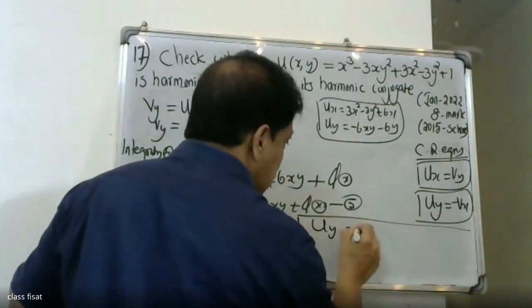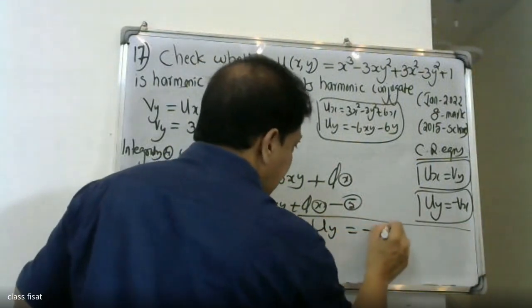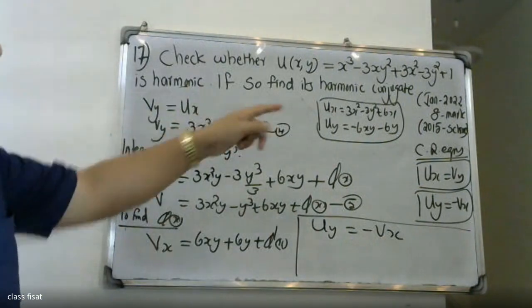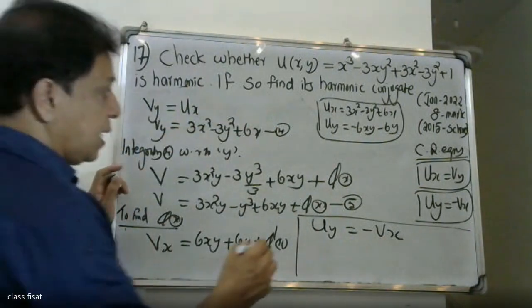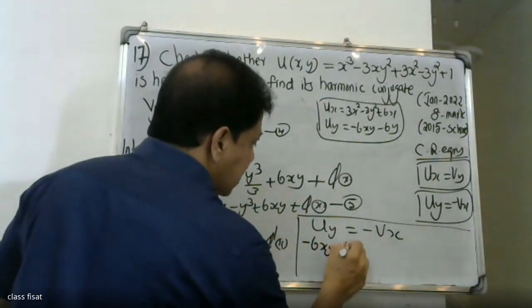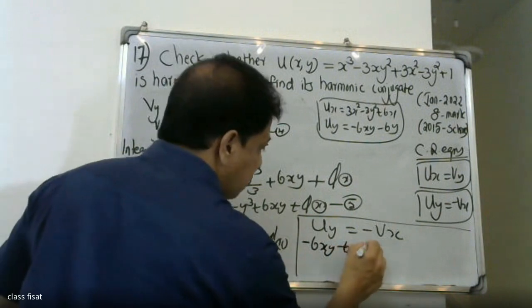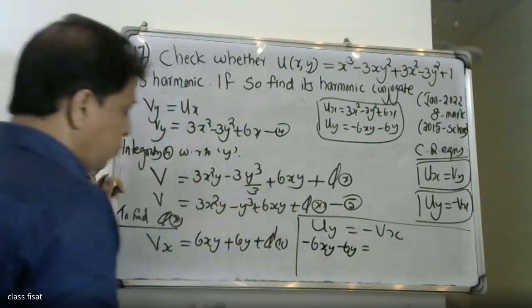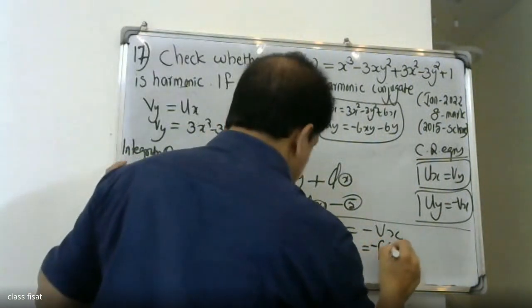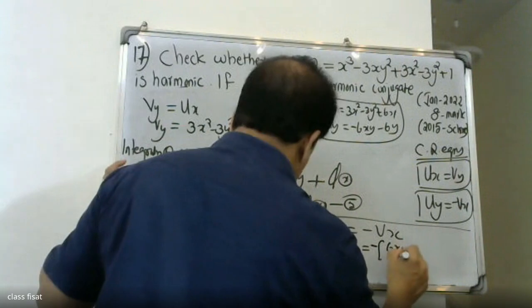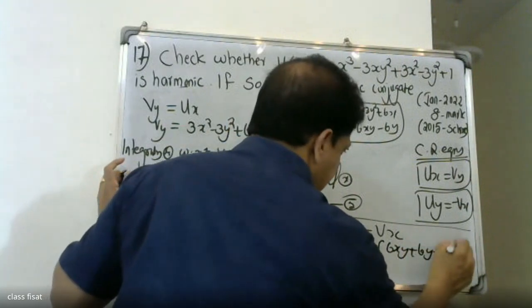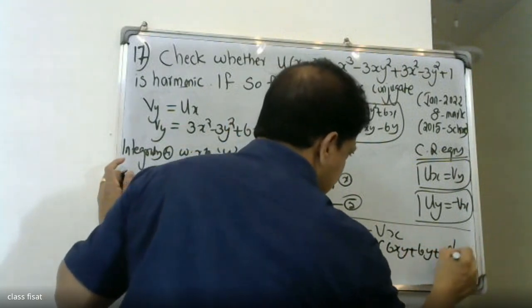From the second Cauchy-Riemann equation, uy equals minus vx. We have uy = minus 6xy minus 6y. Therefore minus vx = minus 6xy minus 6y, so vx = 6xy plus 6y plus phi'(x).